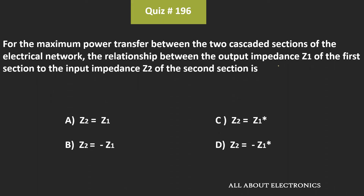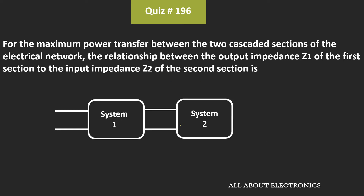Welcome to the YouTube channel all about electronics. Here we have two cascaded sections of an electrical network. The output impedance of the first section is Z1, while the input impedance of the second section is Z2. We need to find the relationship between Z1 and Z2 such that maximum power will be transferred between the two cascaded sections.